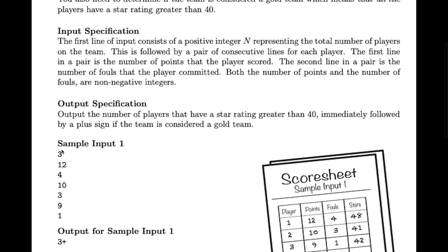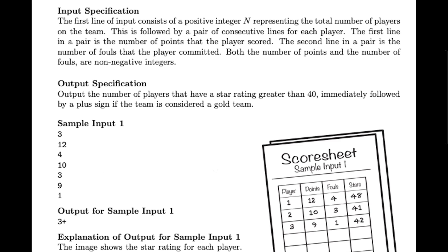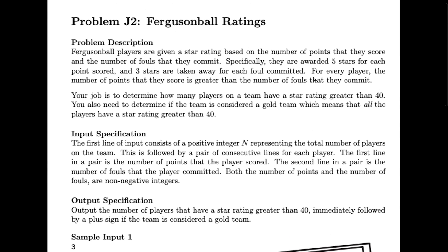You input a team — say there are 3 people. The first player has 12 scores and 4 fouls, the second has 10 scores and 3 fouls, and the third has 9 scores and 1 foul. If a player gets 40 points or more, we add them to a counter. If everyone on the team gets more than 40 points, we add a plus sign, because it represents a gold team where all players have a star rating greater than 40.